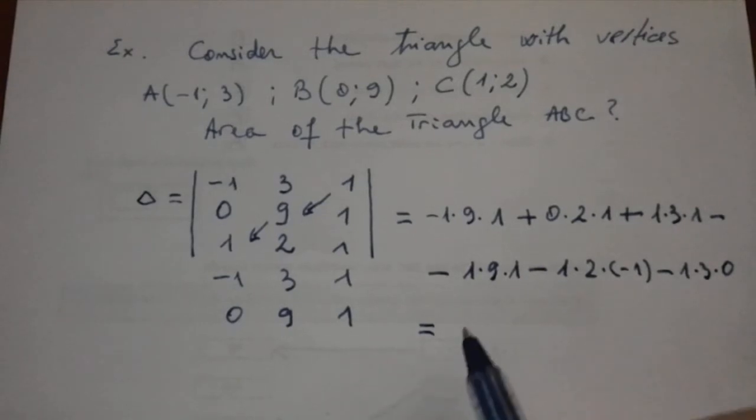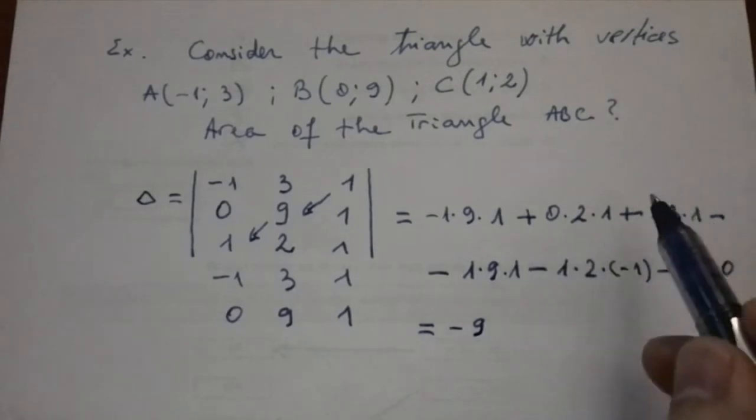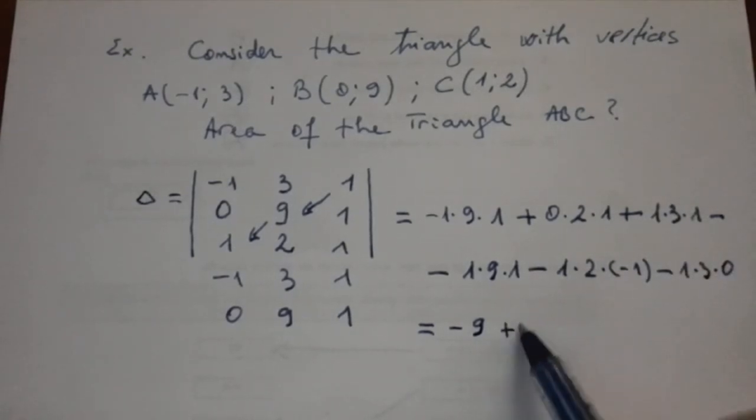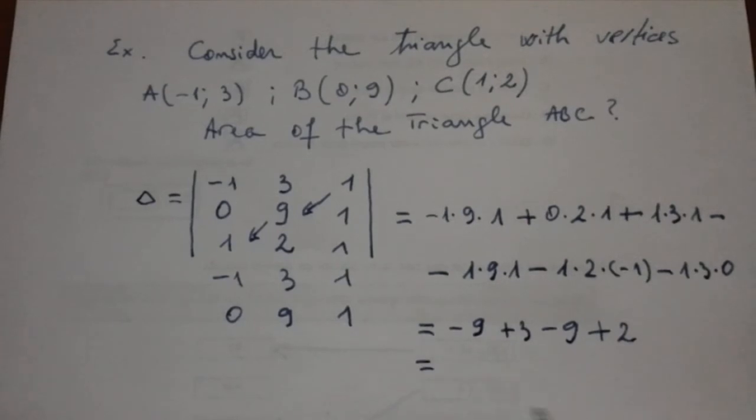We find the answer: -4 + 9 + 0 + 3 - 9 + 2 - 0 and -6 - 7. This is the calculation of the determinant.